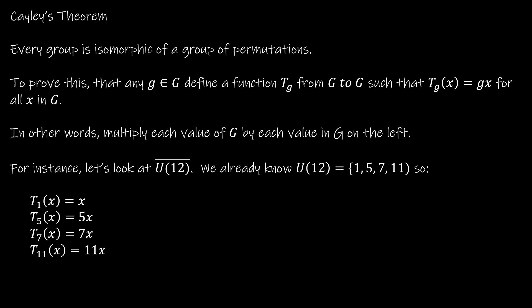When dealing with Cayley's theorem, we're going to define a function t_g that goes from G to G. We're not changing the group, but we're saying that t_g of x is equal to g times x. In other words, we're going to multiply each value of g by each element of G on the left.